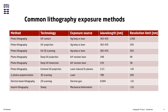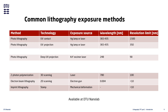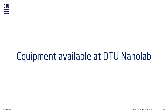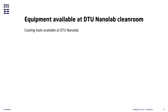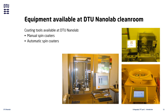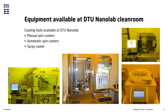The following methods are available at DTU Nanolab. We have a number of spin coaters which can be used for coating whole wafers or chips. Some of the spin coaters are manual tools while others are automatic tools. On the automatic tools we have several standard resists; if you want to use non-standard resists, you need to use one of the manual spin coaters. We also have a spray coater, which is great for coating oddly shaped substrates.